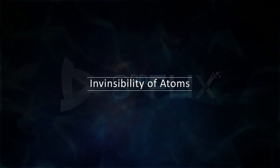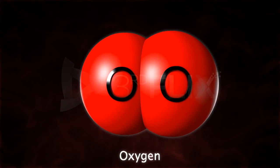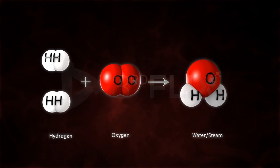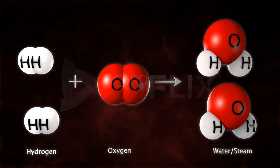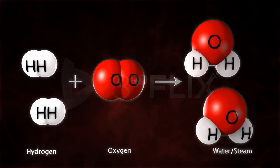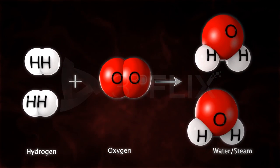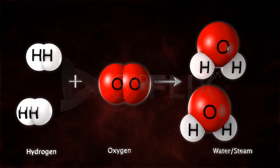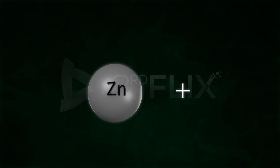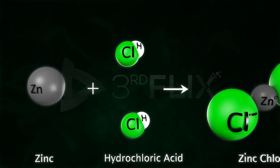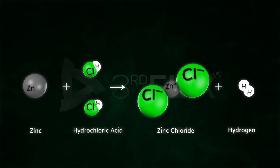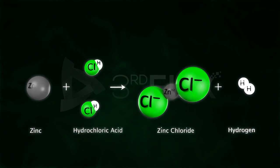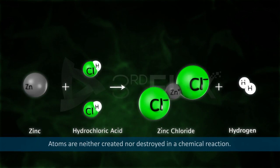Indestructibility of atoms. Hydrogen reacts with oxygen to form water or steam. On studying the chemical equation closely, we see that there are four atoms of hydrogen and two atoms of oxygen on the reactant side, and the same number on the product side. Similarly, zinc reacts with dilute hydrochloric acid to form zinc chloride and hydrogen. Both the reactant side and product side contain the same number of atoms: one atom of zinc and two atoms each of chlorine and hydrogen, making five atoms on both sides. This endorsed Dalton's finding that atoms are neither created nor destroyed in a chemical reaction.